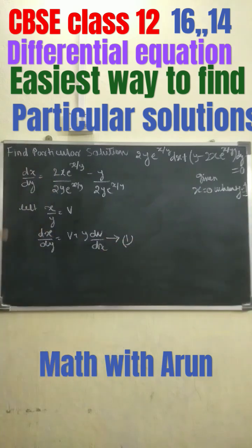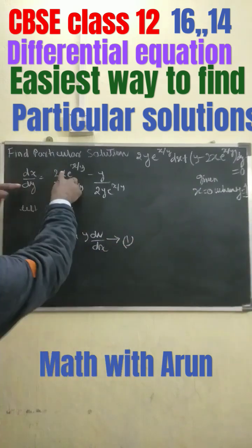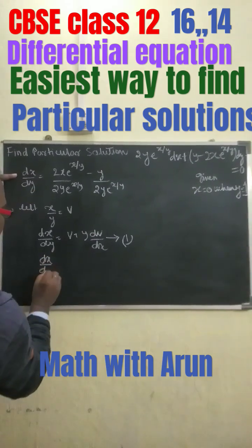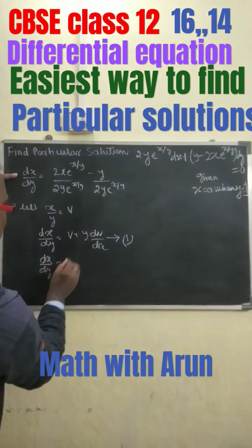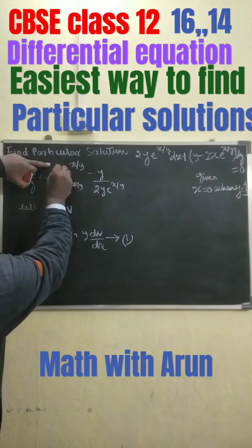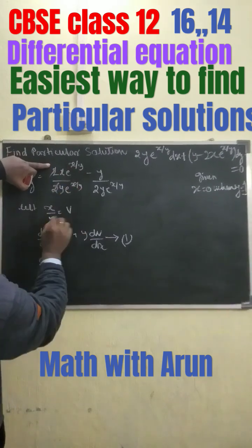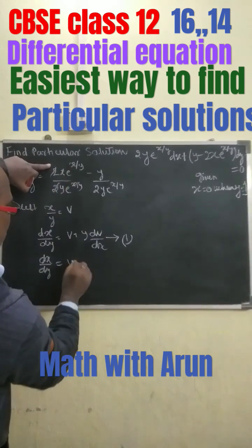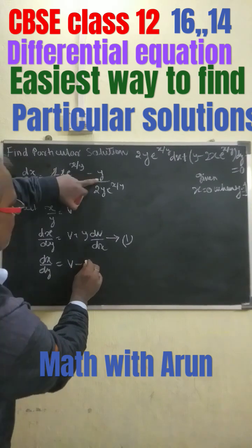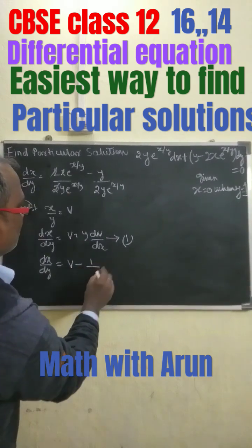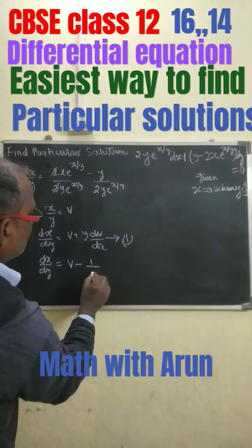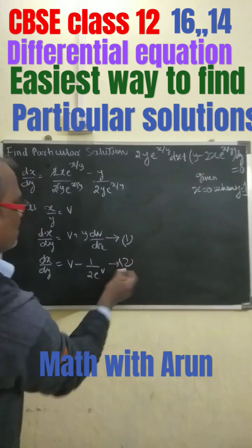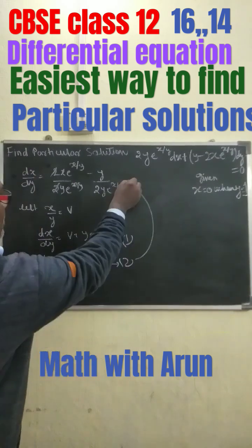Also, by substituting the value we get dx/dy equals this expression. The 2 gets cancelled off. Since x/y means v, we can substitute. This gets cancelled. So we get v minus 1 divided by 2^v. This equation is what we are getting from the substitution.